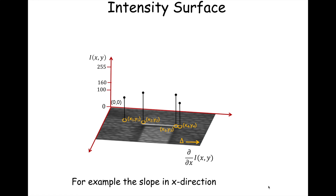We have a bunch of pixels here in image coordinates at positions x1, y1, x2, y2, x3, y3, and x4, y4. Each pixel's intensity value is thought of as an elevation, drawn as the intensity axis — you could consider it the z axis if you're thinking in three dimensions. We can notice that a darker value at x1, y1 has lower elevation, while a lighter value at x2, y2 has higher intensity elevation.